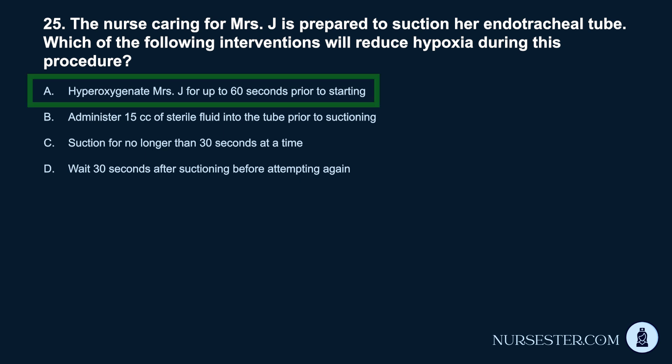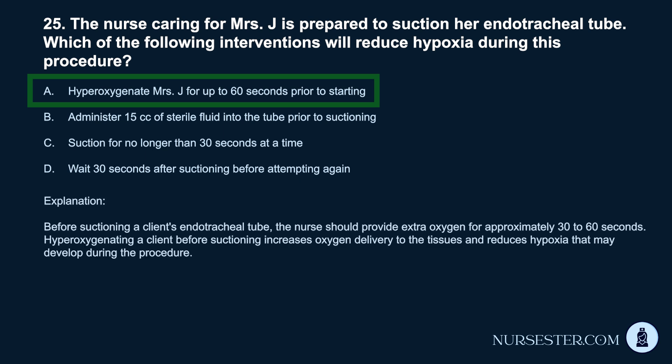Correct answer: A. Hyperoxygenate Mrs. J. for up to 60 seconds prior to starting. Before suctioning a client's endotracheal tube, the nurse should provide extra oxygen for approximately 30 to 60 seconds. Hyperoxygenating a client before suctioning increases oxygen delivery to the tissues and reduces hypoxia that may develop during the procedure.